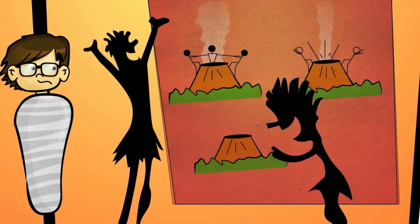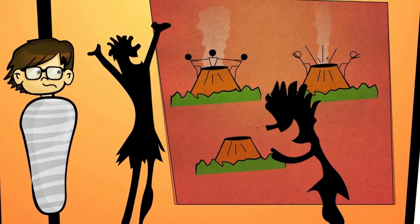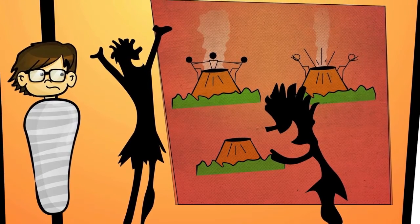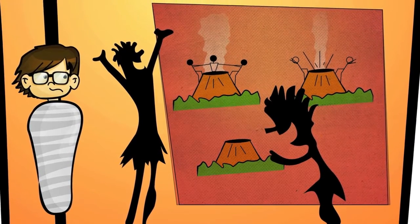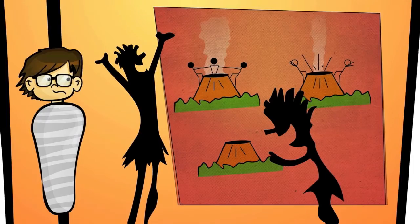To Willis' dismay, the natives have decided to feed Willis to the volcano as a sacrifice in an effort to appease it. They immediately begin preparations for the sacrificial ceremony, which they plan to perform the next morning.